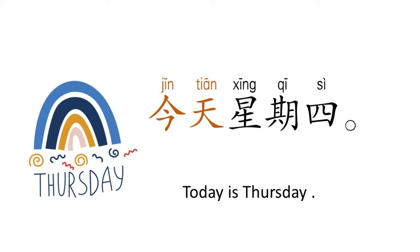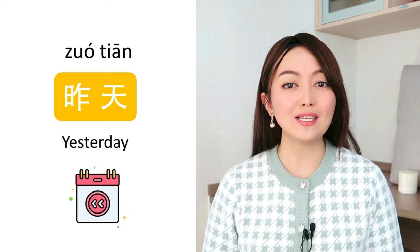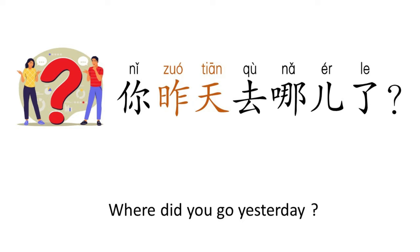下一个, next one: 昨天 is 'yesterday.' 昨天. 你昨天去哪儿了? means 'Where did you go yesterday?' 你 is 'you', 昨天 is 'yesterday', 去 is 'to go', 哪儿 is 'where', and 了 is a function word to indicate the past.